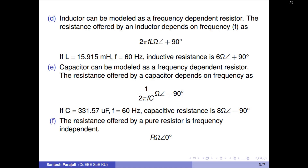Unlike a resistor, inductor and capacitor introduce phase shift between current and voltage. E: Capacitor can be modeled as a frequency-dependent resistor. At 60 Hz, a 331.57 mF capacitor offers a resistance of 8 ohms with minus 90 degrees phase shift between current and voltage. Capacitor always introduces minus 90 degrees phase shift.